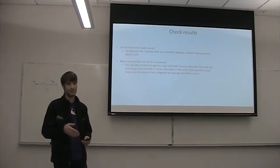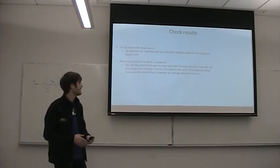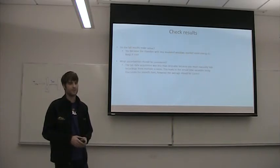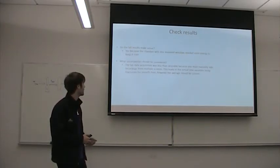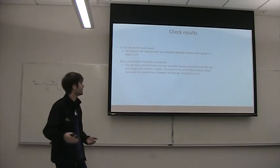Right here, so does that make sense? And yes, it makes sense. The windows with less insulation needed more airflow and more heat rejection. And what uncertainties should be considered?